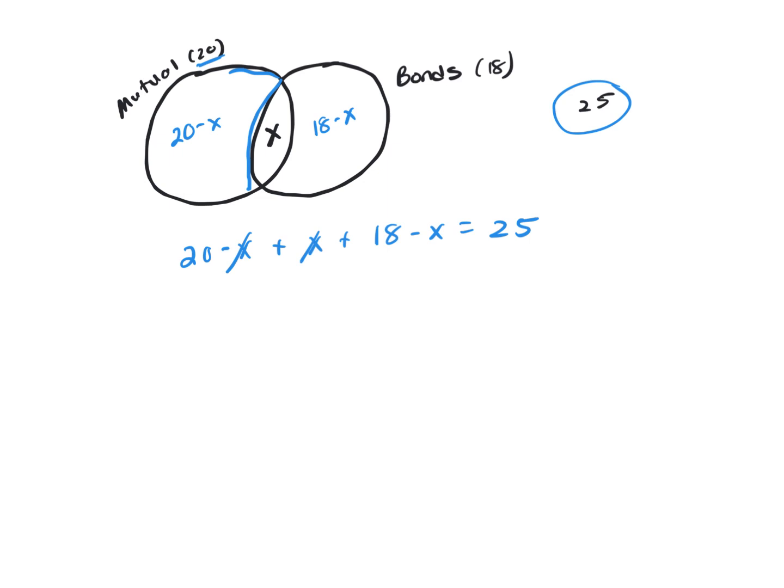Those X's cancel, and you're left with 38 minus X equals 25. Subtracting 38 gives negative X equals negative 13. X equals 13 is your answer.